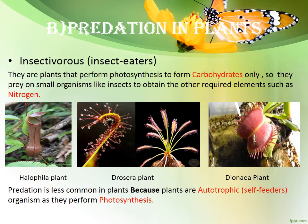Predation also happens in plants, but it is less common in plants than in animals. Plants also feed on some insects to get their protein — like the drosera and the daenaeum.